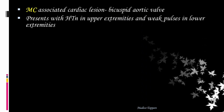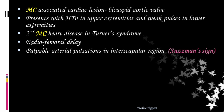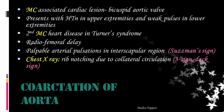This condition is most commonly associated with bicuspid aortic valve. We can see hypertension in upper extremities and weak pulses in lower extremities. It is the second most common heart disease in Turner syndrome. Clinically we see radio-femoral delay and palpable arterial pulsation in the interscapular region, called Suzman's sign. On chest X-ray there will be rib notching due to collateral circulation, called the S3 sign or 'figure of 3' sign. The condition is coarctation of aorta.